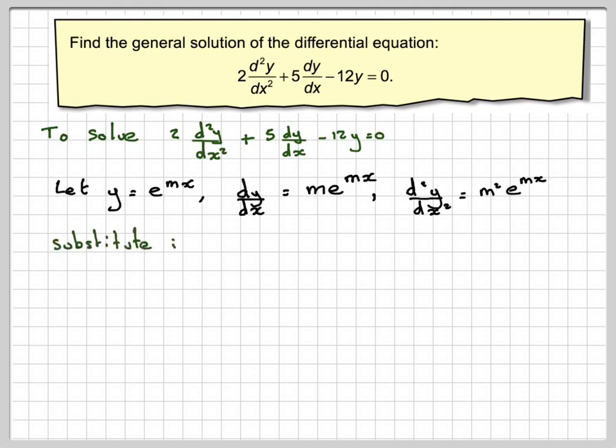And then if we substitute that in, so we're going to get 2 times this, 2m squared e to the mx, plus 5m e to the mx minus 12 e to the mx is equal to 0.